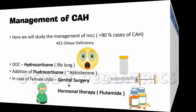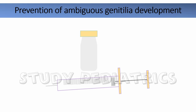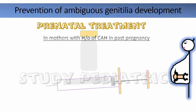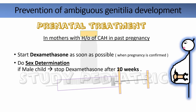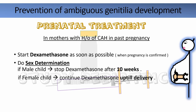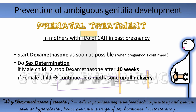Let's see the prevention strategy — prevention of ambiguous genitalia development, i.e., prenatal treatment. In mothers with a history of CAH in a past pregnancy, we start dexamethasone as soon as possible, when pregnancy is confirmed. We also do sex determination: if the child is male, we can stop dexamethasone after 10 weeks, since male genitalia are usually developed by then. But if female, continue dexamethasone up till delivery, as chances exist that the child may develop ambiguous genitals. Steroids provide a negative feedback to the pituitary and prevent adrenal hyperplasia, hence preventing the surge of sex hormones like testosterone and other side effects related to hyperplasia.